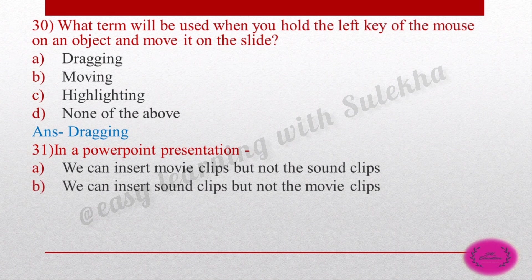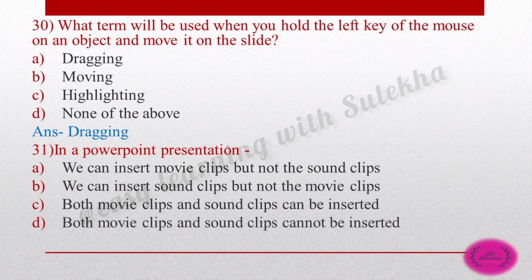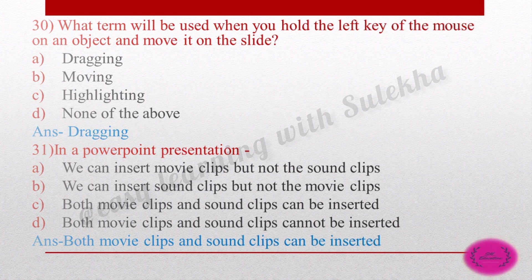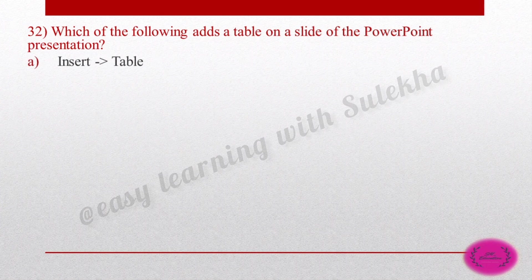Question 31: In a PowerPoint presentation, which is correct? Option A: we can insert movie clips but not sound clips. Option B: we can insert sound clips but not movie clips. Option C: both movie clips and sound clips can be inserted. Option D: both cannot be inserted. The right answer is option C — we can add both movie clips and sound clips.